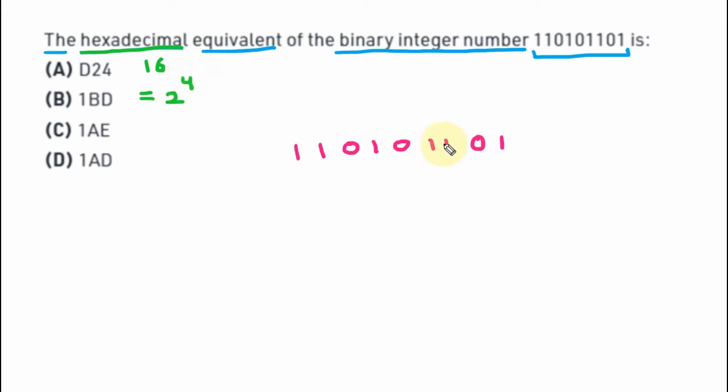So here we are making the combination of 4 bits. So extreme right 4 bits, then again 4 bits. Here we can see that 1 is alone. So here, preceding we are applying 3 zeros, so that there will be again 4 bits.